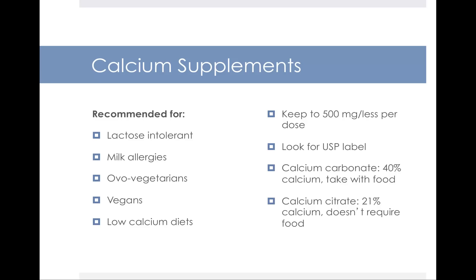Look for the USP label, which indicates a non-biased third-party review of that product. There are two primary sources of calcium supplements: calcium carbonate and calcium citrate. Calcium carbonate requires stomach acid for maximal absorption, so it should be taken with food; 40% of that supplement is calcium. With calcium citrate, you can take it with or without food, but only 21% of that supplement is calcium. Most people find calcium carbonate is a more affordable and more bioavailable way to take calcium supplements, but remember to take it with food for optimal absorption.